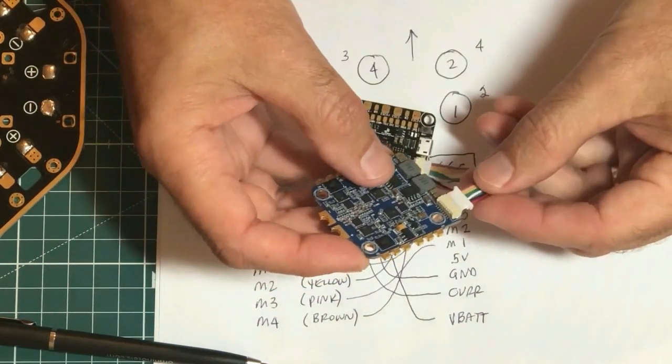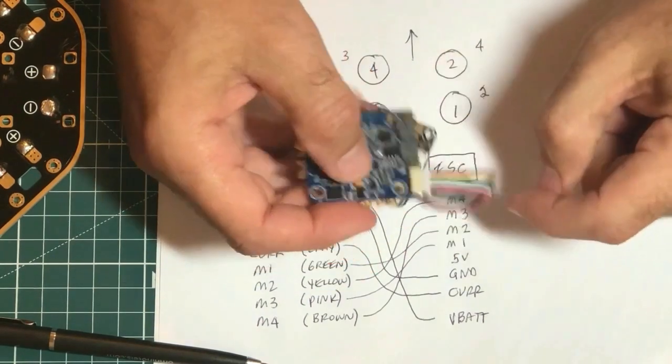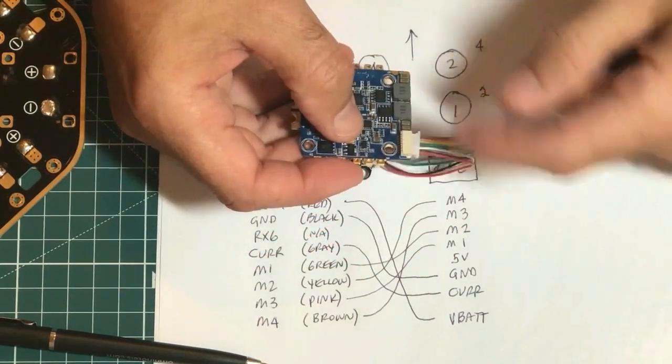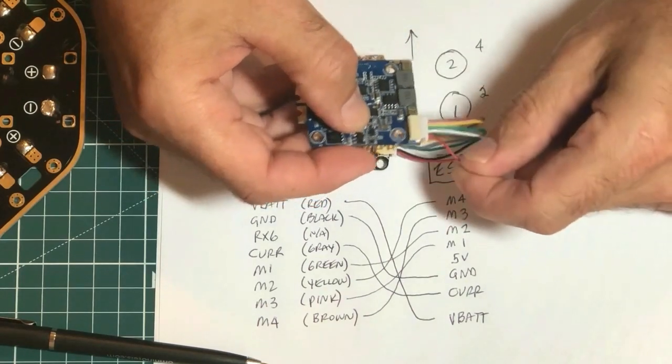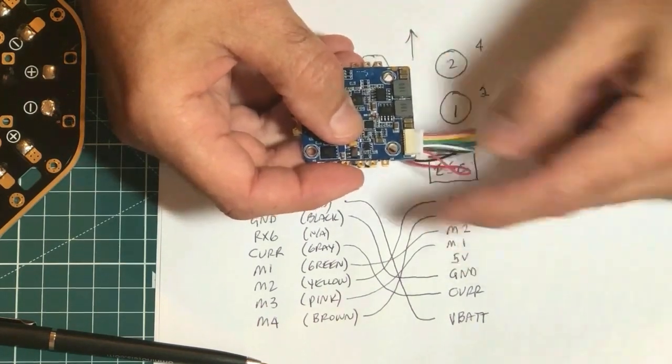On the ESC, they start with this pin being motor four going all the way down to VBAT. So you can see my VBAT is in the motor four position. I've got to move all these wires around.